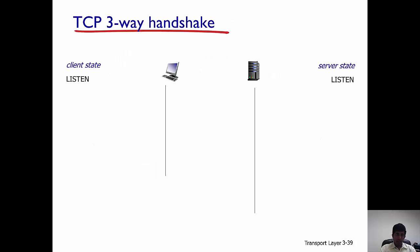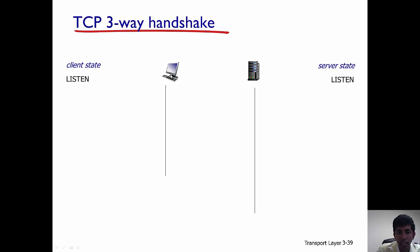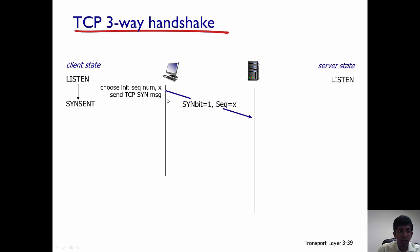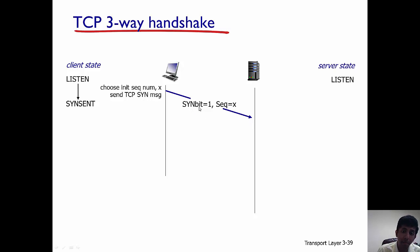In TCP there is a three-way handshake. A two-way handshake is not sufficient because delays in the internet can cause connection establishment to not happen properly. So let's assume there is a client and a server that want to establish a TCP connection. Both are initially listening, and the client sends a segment to the TCP server with the SYN bit equal to one and a sequence number equal to X.